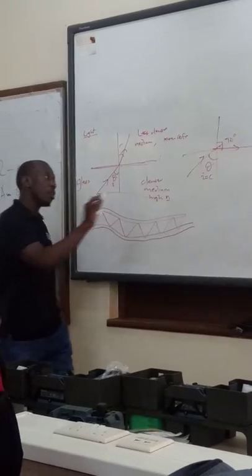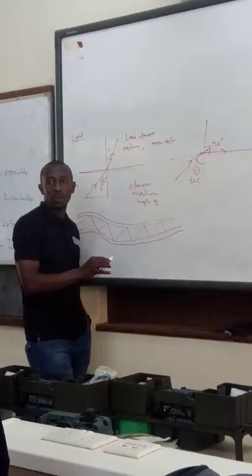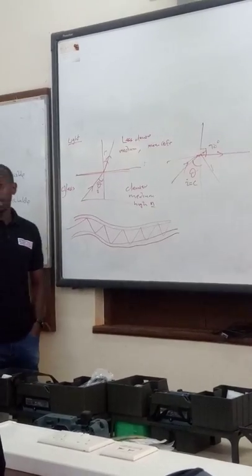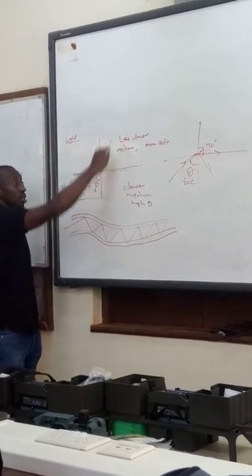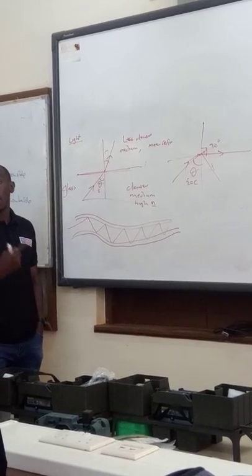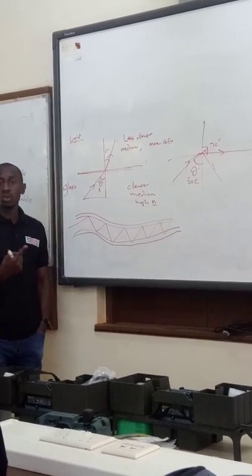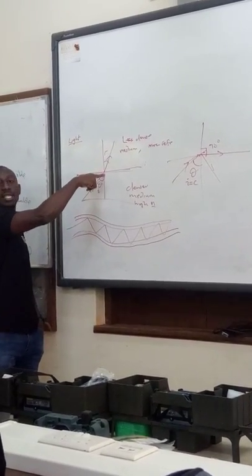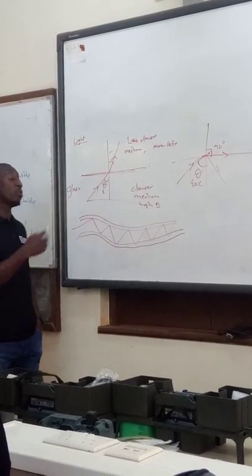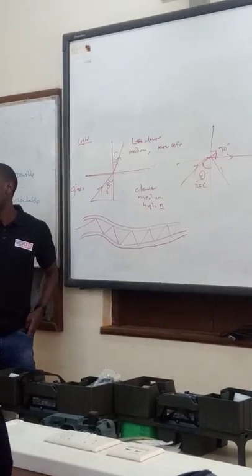So if we increase this angle slightly beyond the critical angle, the ray now reflects back. Two conditions: first, the ray of light should be moving from a more dense medium to a less dense medium. Second, the angle at which the light hits the surface of the fiber — the surface of glass — should be greater than the critical angle, so that the entire ray reflects back. That is total internal reflection.